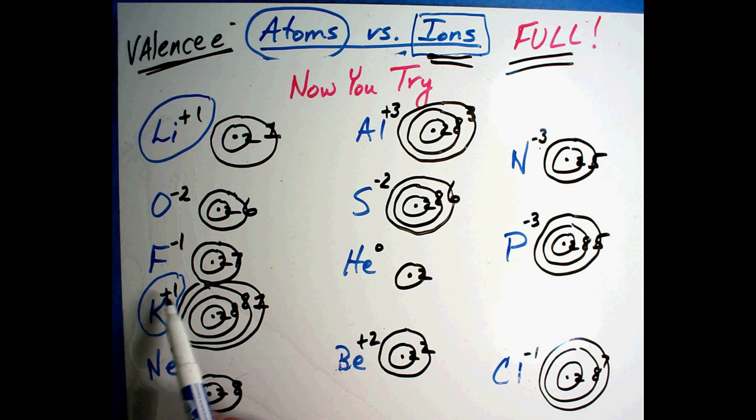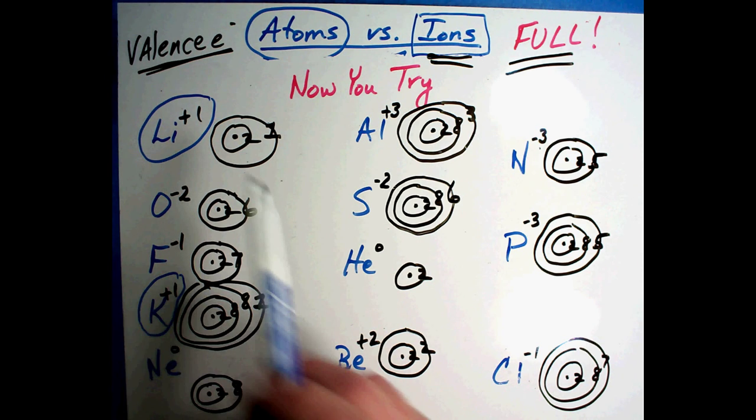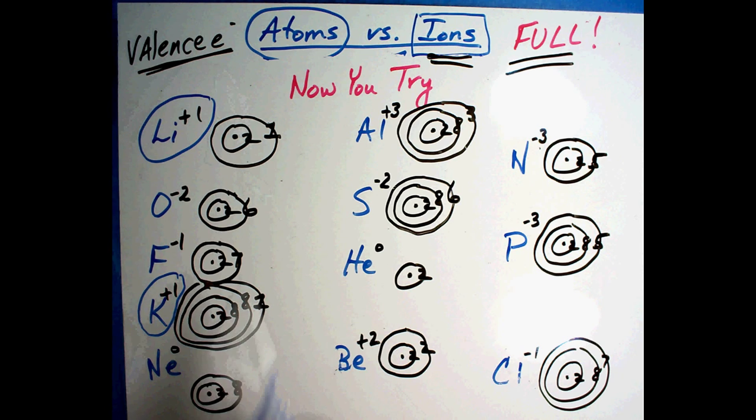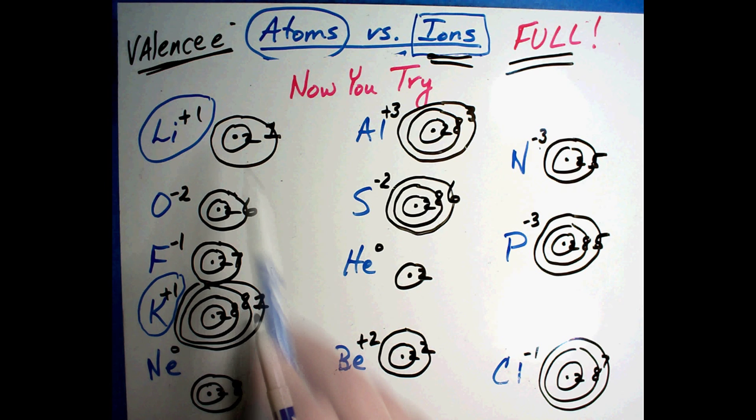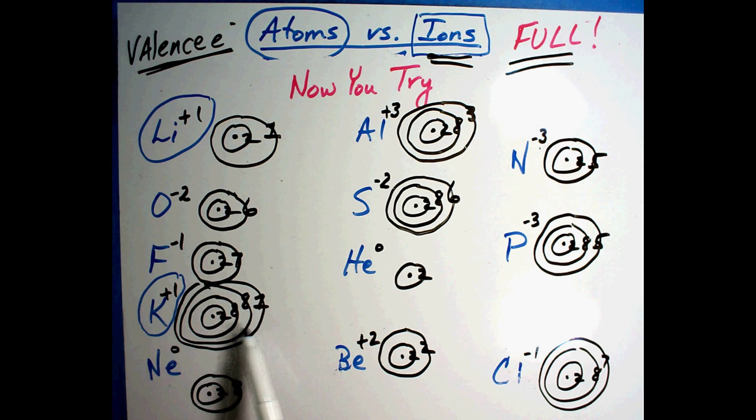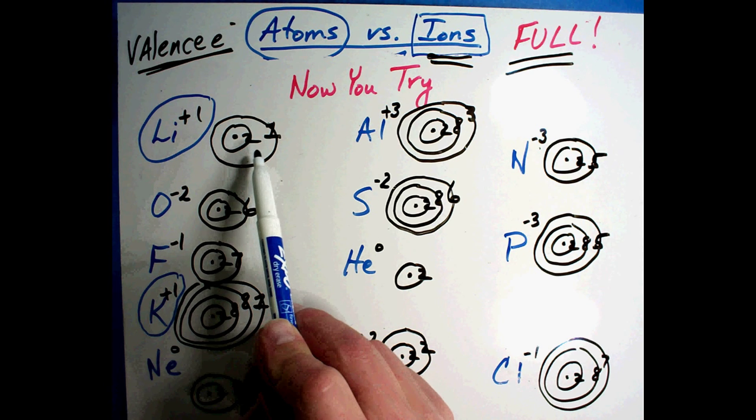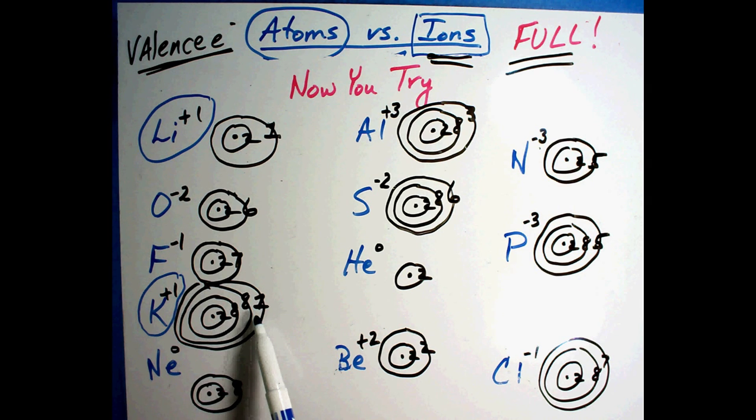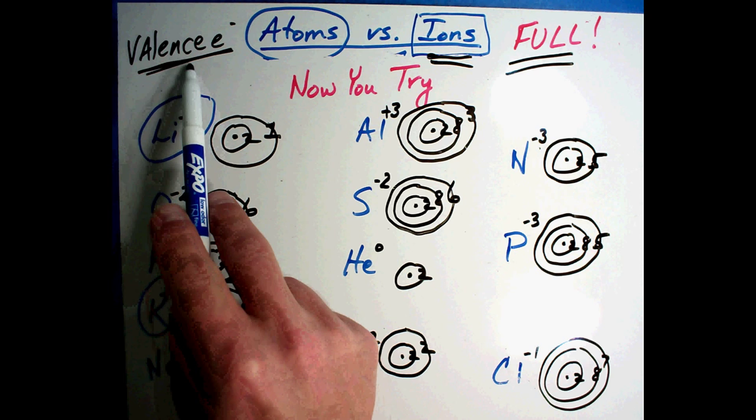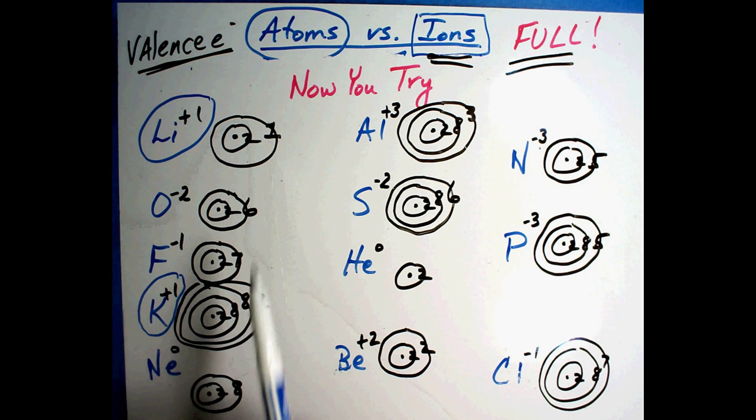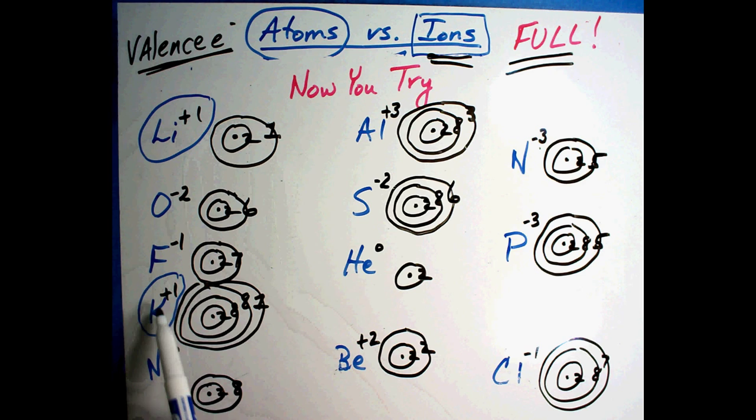Every time you have an atom or an ion, you can actually draw them out like we did and get the right answer. But we learned very quickly that there are some shortcuts that the periodic table does for us. What I want you to do is I want you to notice with me this one and this one. You'll notice they have the same charge. Why would they have the same charge? Well, remember we talked about valence electrons as electrons in the outside ring.